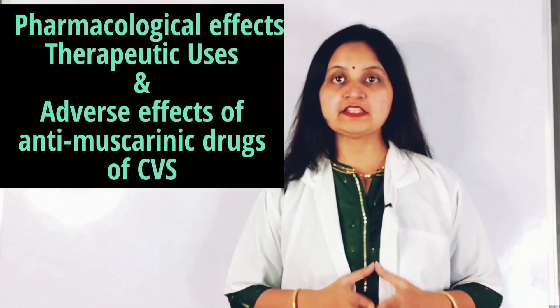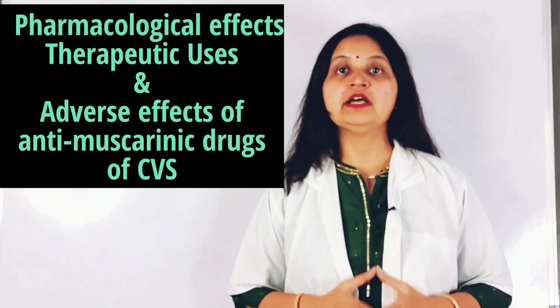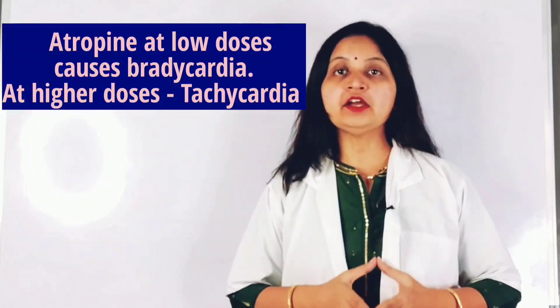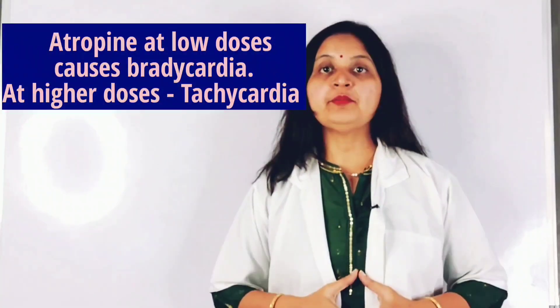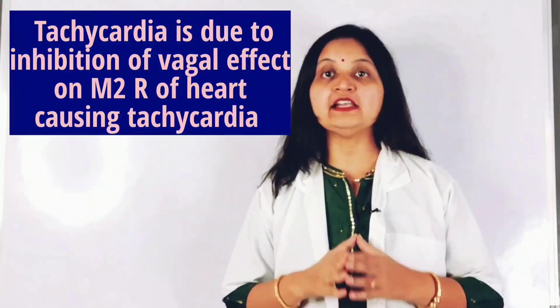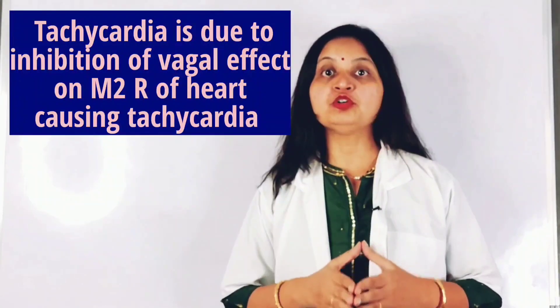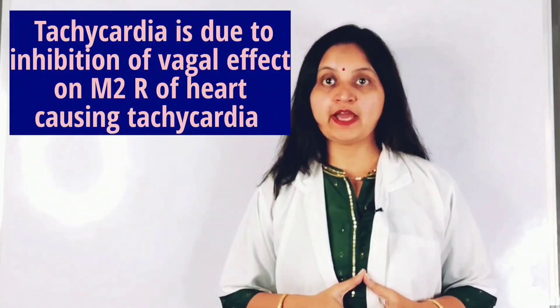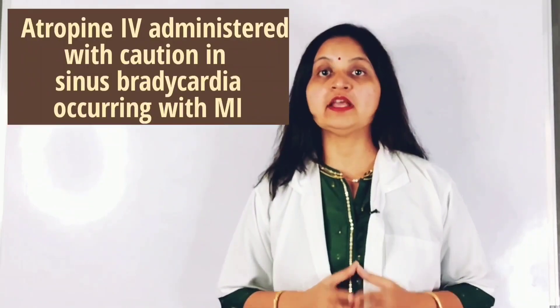Regarding the cardiovascular system: atropine at low doses causes transient bradycardia, whereas at higher doses it causes tachycardia. Transient bradycardia is due to blockade of presynaptic M1 receptors on vagal parasympathetic neurons, which facilitates the release of acetylcholine, acting on the SA node causing bradycardia. Tachycardia is due to inhibition of vagal effect on M2 receptors of the heart. Therefore, atropine intravenously should be administered with caution in sinus bradycardia occurring with myocardial infarction.